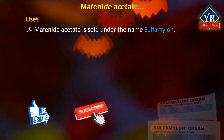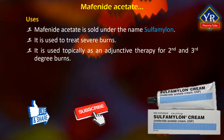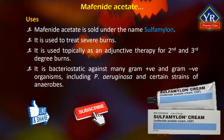Mafenide acetate is sold under the name Sulfamylon. It is used to treat severe burns. It is used topically as an adjunctive therapy for second and third degree burns. It is bacteriostatic against many gram-positive and gram-negative organisms including Pseudomonas aeruginosa and certain types of anaerobes. Some sources state that mafenide is more appropriate for non-facial burns while chloramphenicol and prednisolone or bacitracin are more appropriate for facial burns.